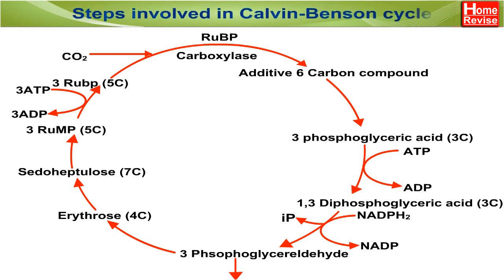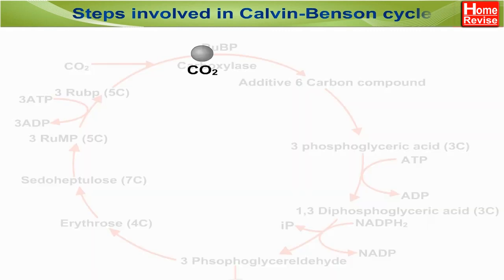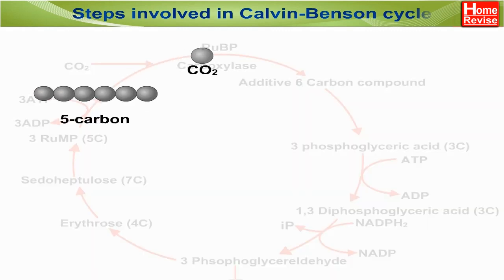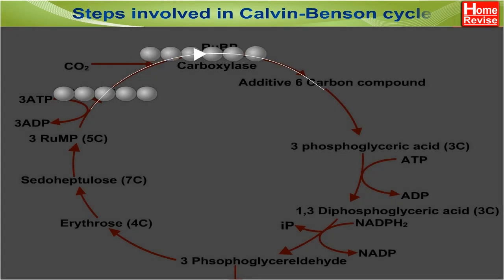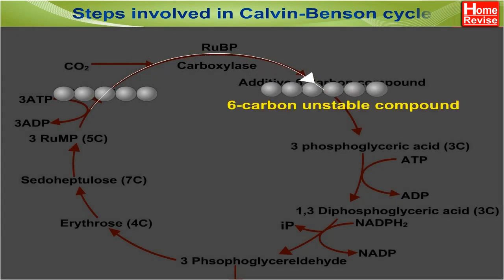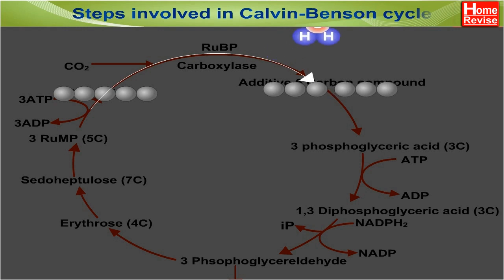Carbon dioxide enters the Calvin-Benson Cycle through a special carbon dioxide acceptor compound, ribulose bisphosphate, i.e. RUBP. Fixation of carbon dioxide is catalyzed by the enzyme RUBISCO — ribulose bisphosphate carboxylase.